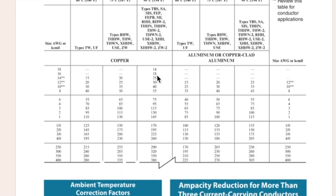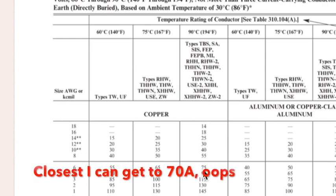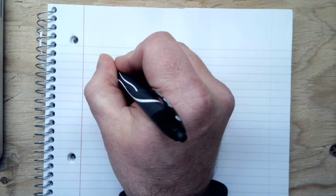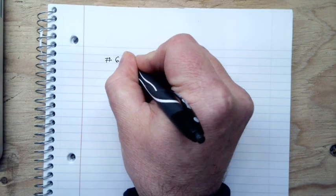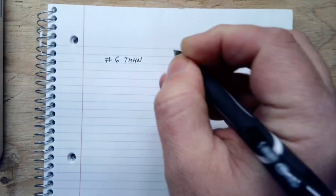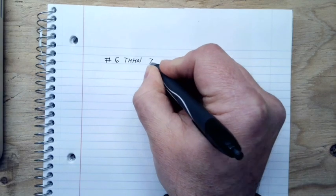The first thing I need to know is I'm looking for THHN copper and that it's got to be rated for 70 amps. So I'm going to come up and look for my THHN. I'm in copper, I'm in THHN, so I'm going to scroll down, and 75 is the closest I can get without going too crazy. So 75 amps will be a number 6 wire. So now over here I'm going to write number 6, THHN. And then that is good to 75 amps.